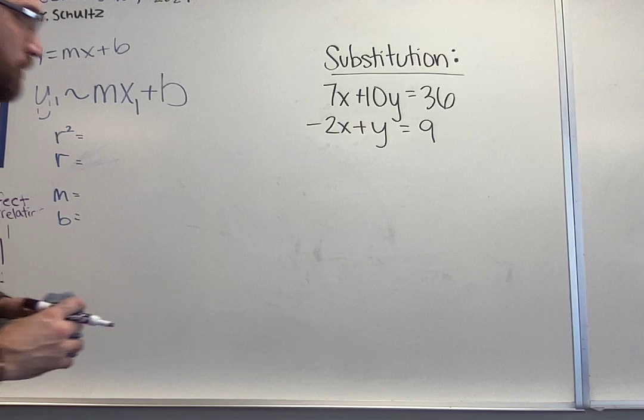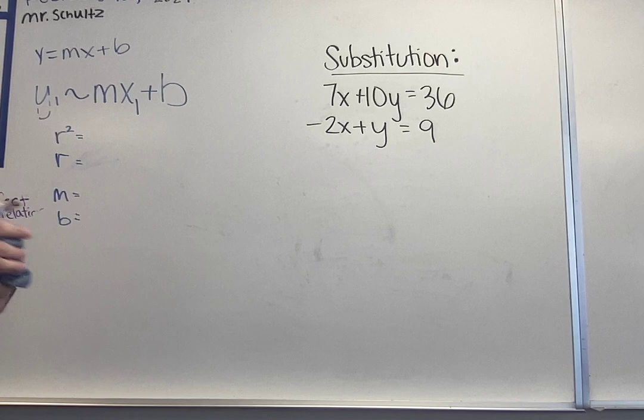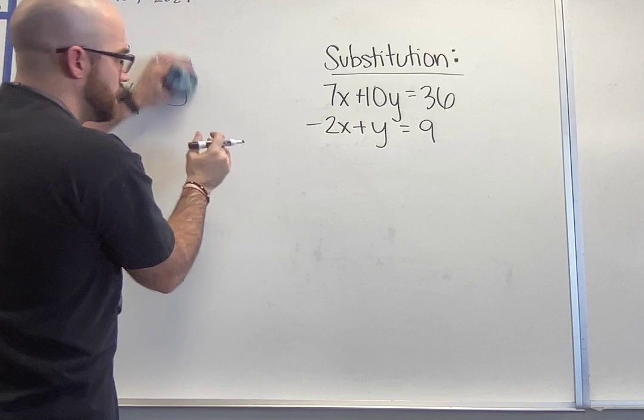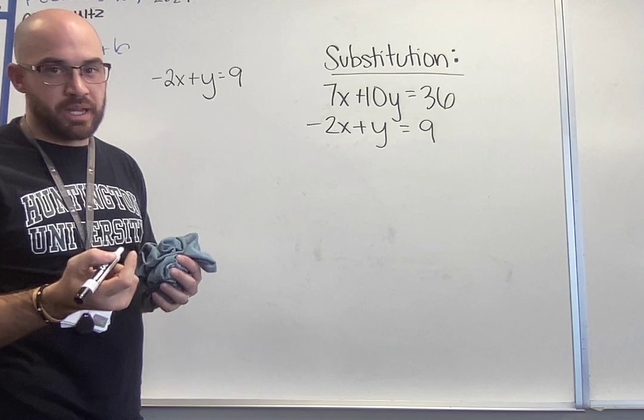7x and 10y I'm going to have to do a lot of work to get one of those variables by itself. If I look at the second problem I've got a negative 2 in front of the x so I prefer not to mess with this, and then I have a y. The y is all by itself or has a 1 for its coefficient so that would be the easiest one for us to solve for. So I'm going to solve negative 2x plus y equals 9. To get my y by itself I'll add 2x to both sides.